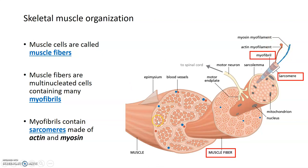To summarize: muscles are made up of muscle fibers or muscle cells, and inside those muscle fibers are bundles of myofibrils. Inside each of these myofibrils are a series of sarcomeres, which are the contractile units, and the sarcomeres are made up of actin and myosin.